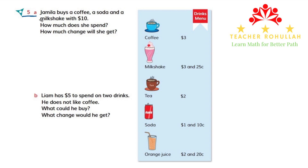In part A of this question, it says Jamila buys a coffee, a soda, and a milkshake with $10. How much does she spend and how much change will she get? To find out how much she spends, we have to add the prices of the items that Jamila is going to buy. The first item she is going to buy is coffee, and its price is $3.